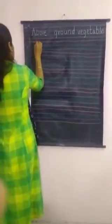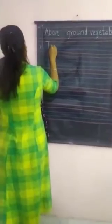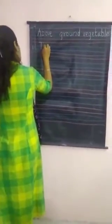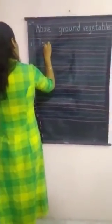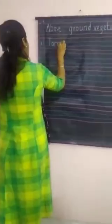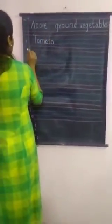So first we will write the vegetable name: tomato. T-O-M-A-T-O. Tomato.